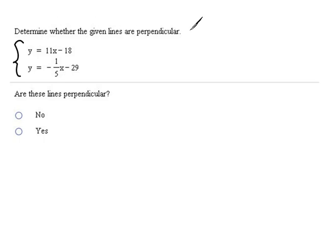Well, in order for them to be perpendicular, the perpendicular slopes, if you'll remember, are opposite sign, opposite reciprocals. Alright, well this very first equation here, the slope is 11, because this is already in the correct order. In the second equation, our slope is negative 1 fifth.